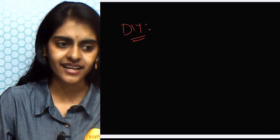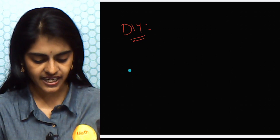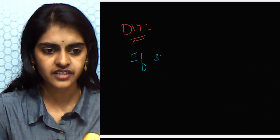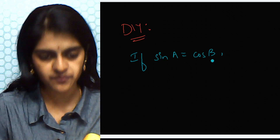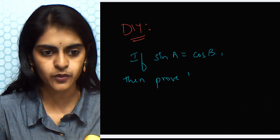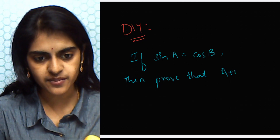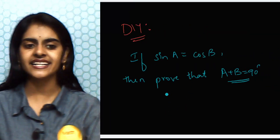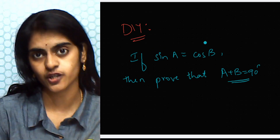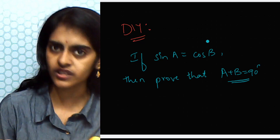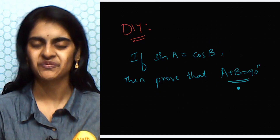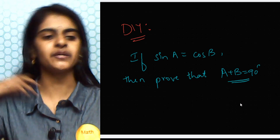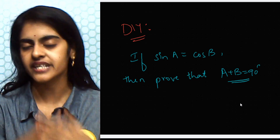So a = 12°. I used trigonometric ratios of complementary angles — sin and cos are complements, so cos 7a = sin(90° − 7a), then equated the angles to solve for a. Now it is time for your DIY question: if sin A = cos B, prove that A + B = 90°. Hint: change both to the same ratio — either both sine or both cosine — and you'll get the answer.